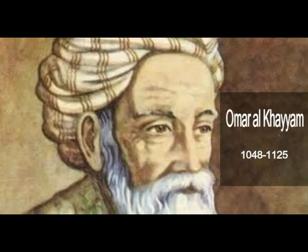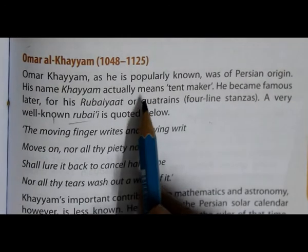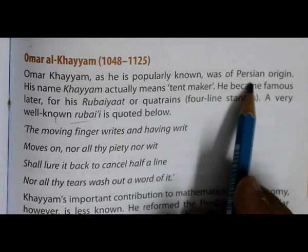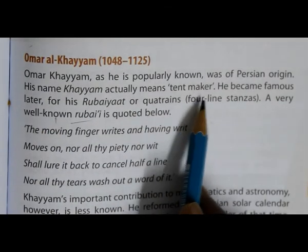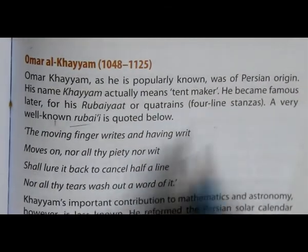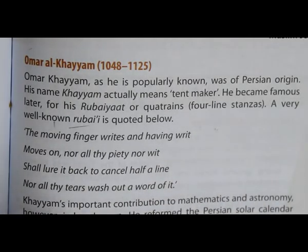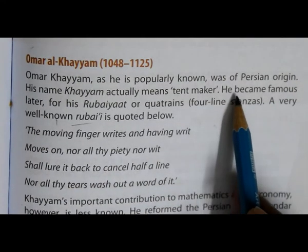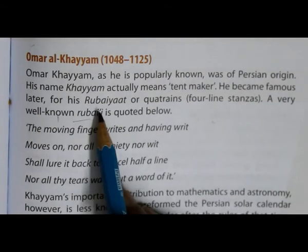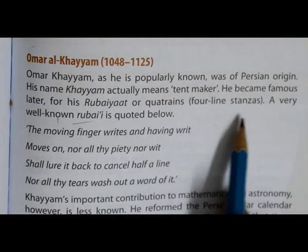Our next scholar is Umar Khayyam, who lived from 1048 to 1125. As he is popularly known, he was of Persian origin. His name Khayyam actually means 'tent maker.' He became famous for his Rubaiyat — quatrains, which are four-line stanzas.